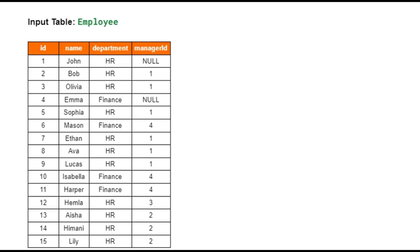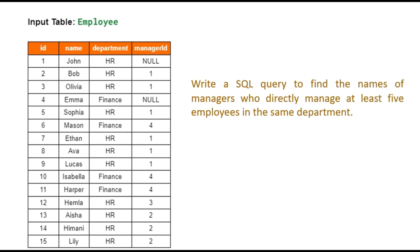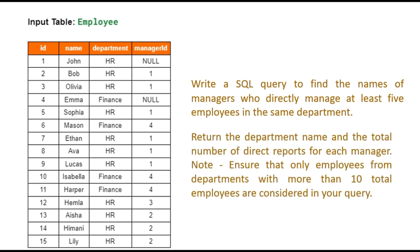You are given a table named 'employee' with the following schema: 'id' is the primary key, 'name' is the employee name, 'department' is the department the employee works in, and 'manager_id' is the ID of the employee's manager. If manager_id is null, the employee has no manager assigned. Your task is to write a SQL query to find names of managers who directly manage at least five employees in the same department, returning the department name and total number of direct reports for each manager.